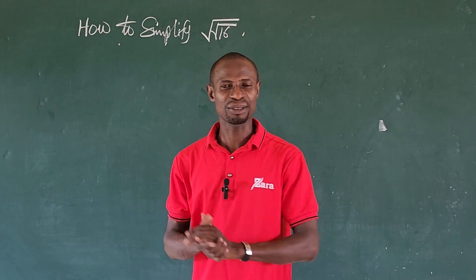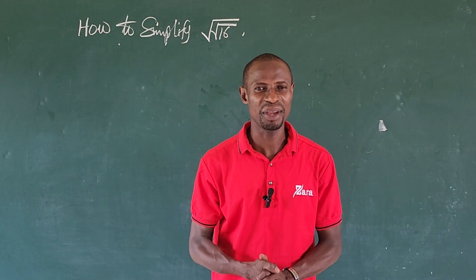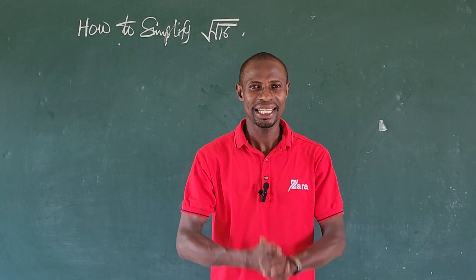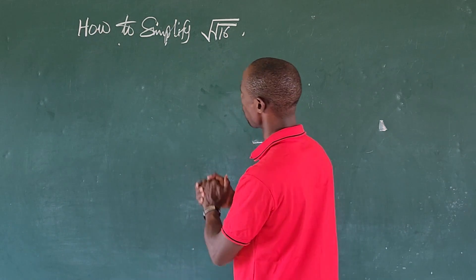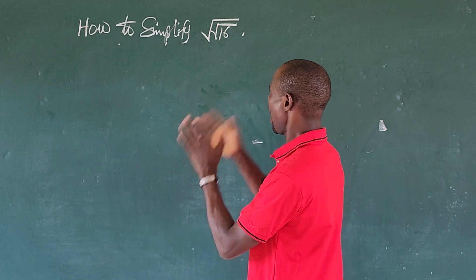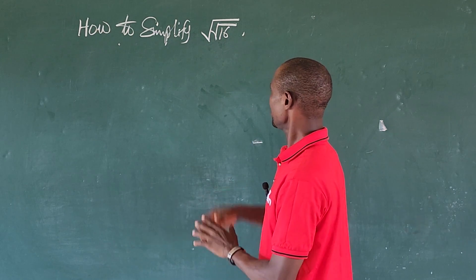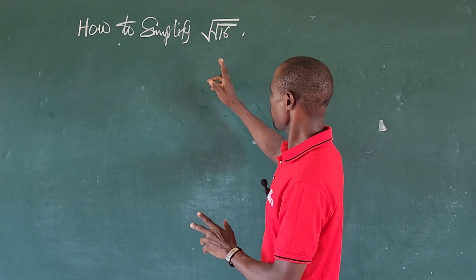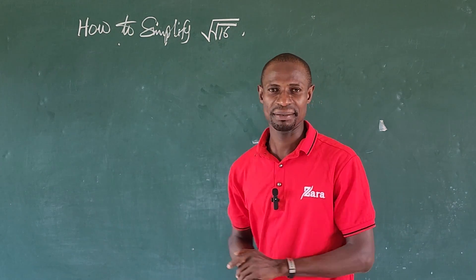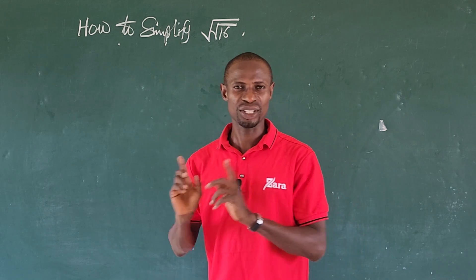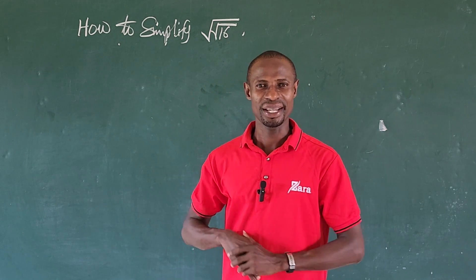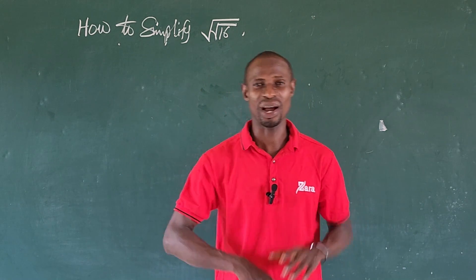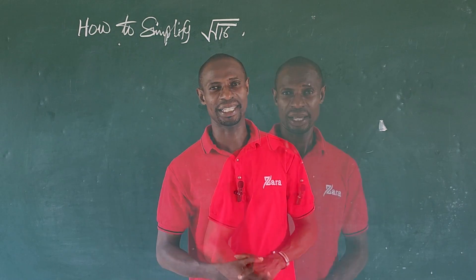Hi everyone, welcome to today's class. Today we have a very nice challenge on the board: how to simplify the square root of the square root of 16. We have a square root of 16 and another square root covering it, so how do we simplify this?